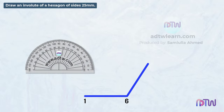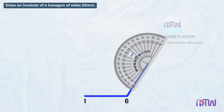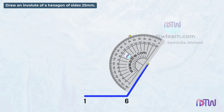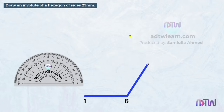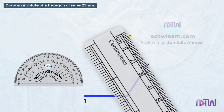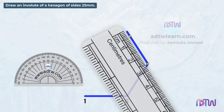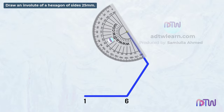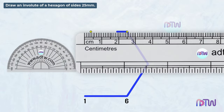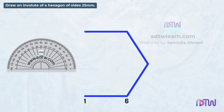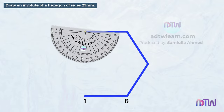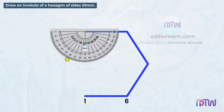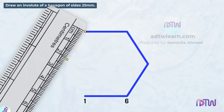Keep the protractor here at this line, mark a point at 60 degrees, and draw a line of 25 millimeters in length from this line. Next, keep it here at this line, mark a point at 60 degrees, and draw a line of 25 millimeters in length. Next, keep it here at this line, mark a point at 60 degrees, and draw a line of 25 millimeters in length.